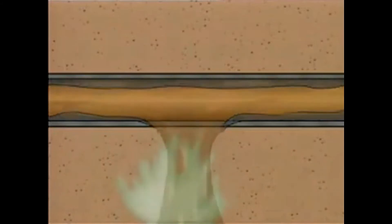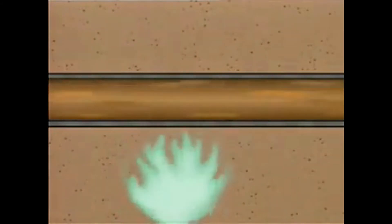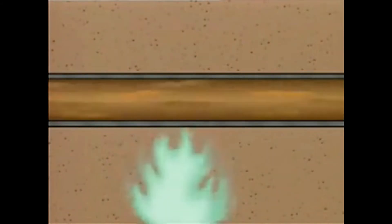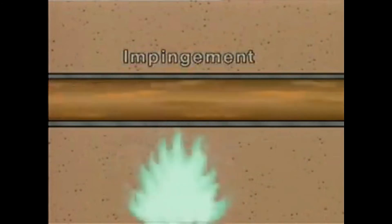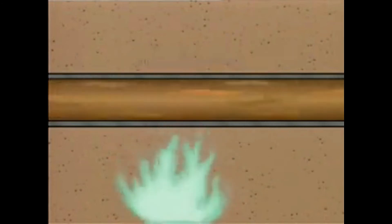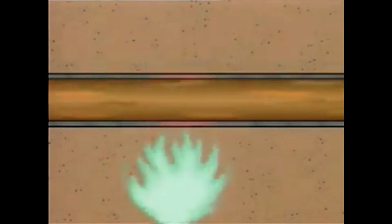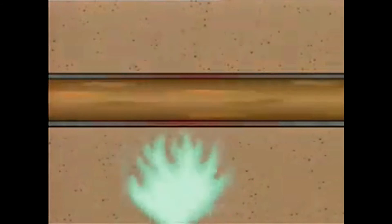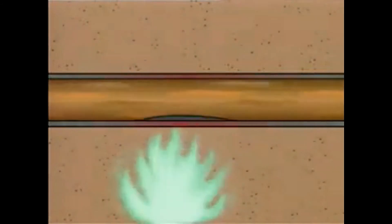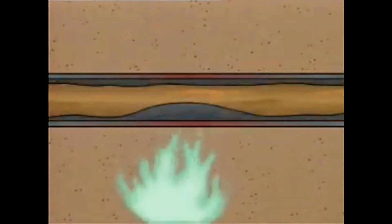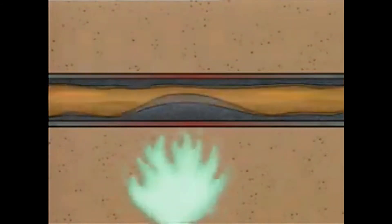Coking can also develop if the burner flames come into contact with the tubes. This problem is called impingement. Impingement can create hot spots on the tubes that can lead to the formation of carbon deposits. If the impingement problem is not corrected, the tubes could eventually rupture.